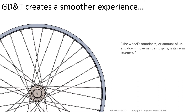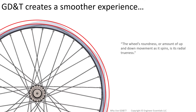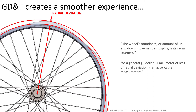This radial trueness will control how bumpy your ride will be. As you can see here, the deviations in this tire have been exaggerated for visual purposes. As a general guideline, a millimeter or less of radial deviation is acceptable. So how would you show that on a drawing? Likely you'll list the nominal dimension and give it some sort of tolerance range that would be allowed to go up and down, since nothing is perfect.